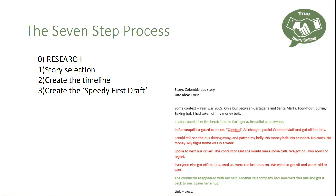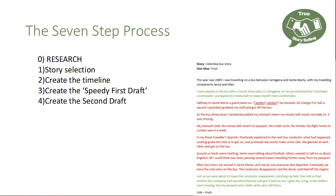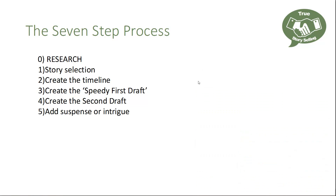What we then do is create a second draft. We take the speedy first draft, expand the sentences out slightly, add in a few line breaks here and there — but fundamentally it still follows the same story pattern and sticks to the plan set out in the timeline. In step five we check for suspense and intrigue, making sure there's sufficient suspense about whether I will or won't get my money belt back.